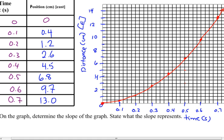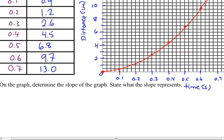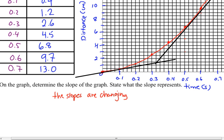The question says: on the graph, determine the slope of the graph. Well, can we really find the slope of this graph if it's not a straight line? No — the slopes are changing. If you were to take a tangent line at the very beginning, the slope is really small — that's the instantaneous slope, which represents the speed at that moment. As we go up, our slope is getting steeper. Our tangent line becomes steeper. So our object is speeding up because the slope of a distance-time graph is velocity. To find velocities on a curve you'd draw a tangent line and find its slope.